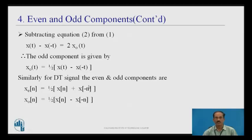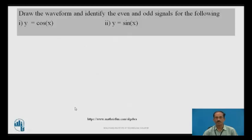Similarly, for discrete time signals, the even and odd components are: xₑ(n) = ½[x(n) + x(-n)] and xₒ(n) = ½[x(n) - x(-n)]. Draw the waveform and identify the even and odd signals for the following signals: first, y = cos(x); second, y = sin(x). Pause the video for a moment, think, and write your answer.